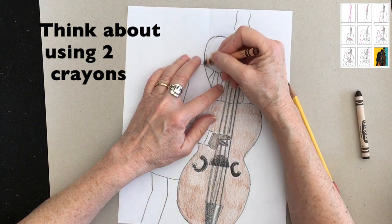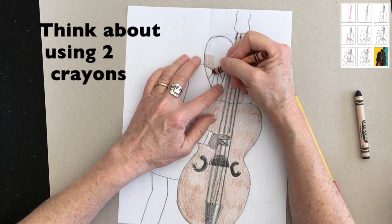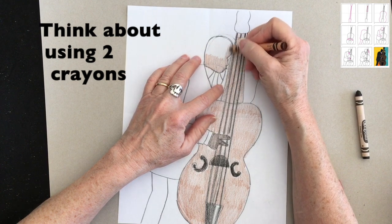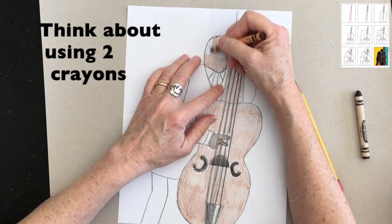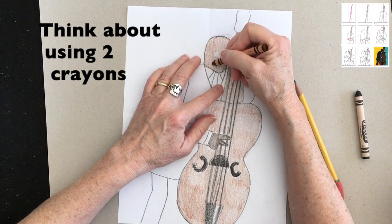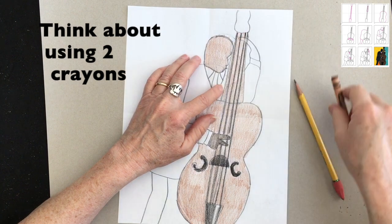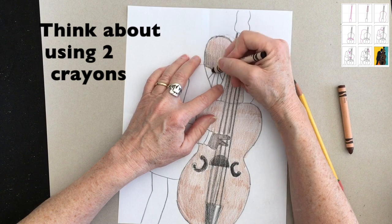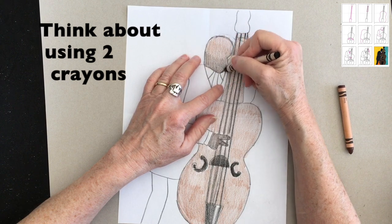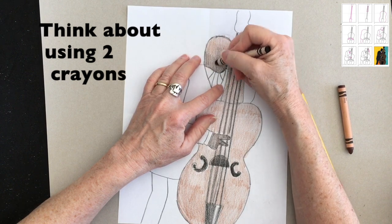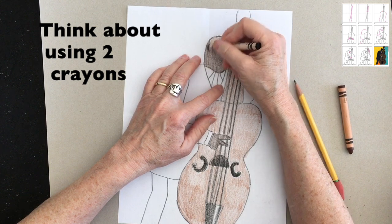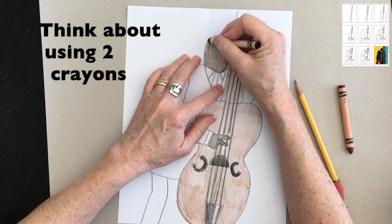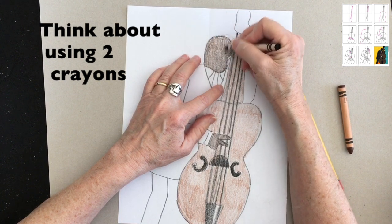I like to do the brown first because it helps me get a good base color in. And then when I go back in with the black on top of that, I know how hard I want to press so that I can get just the tone that I'm looking for. So the only skin that's showing is his head and his two hands.